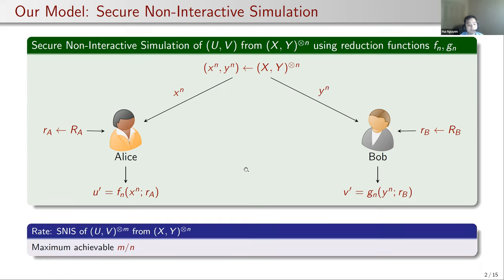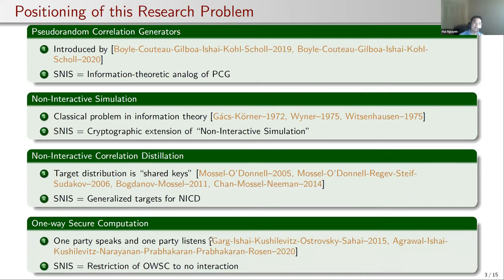These three conditions together define secure non-interactive simulation of UV from XY. To study the rates, we consider m independent samples of the target distribution UV. The rate of this simulation is the maximum achievable ratio m/n. This setup looks very similar to some existing ones in information theory and cryptography.